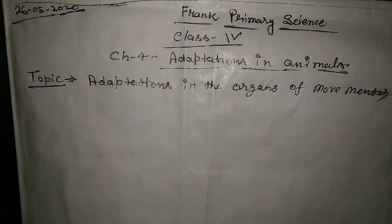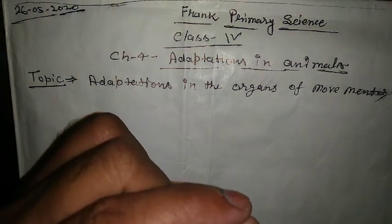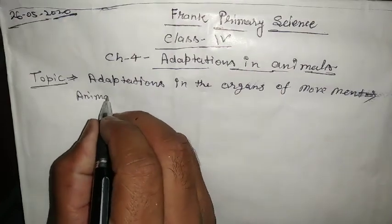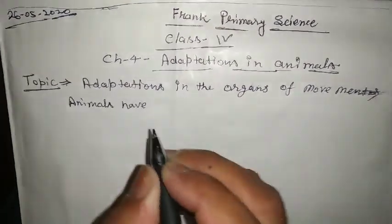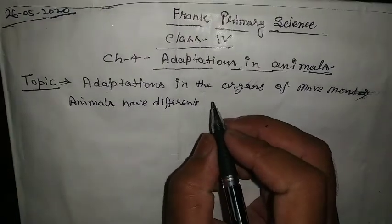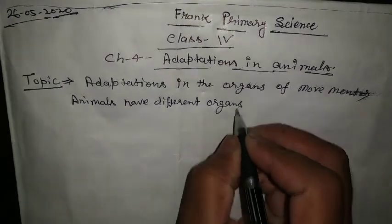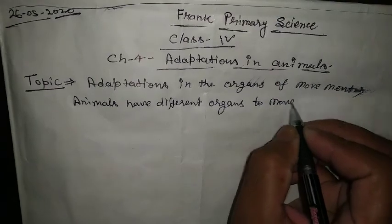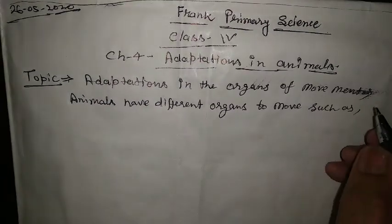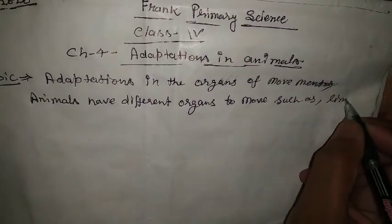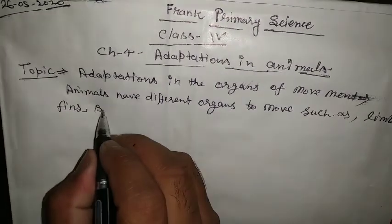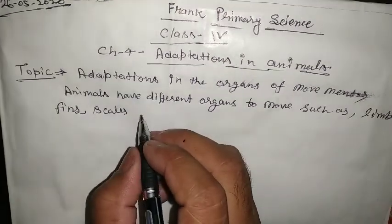So students, animals have different organs to move, such as limbs, fins, scales, and wings.